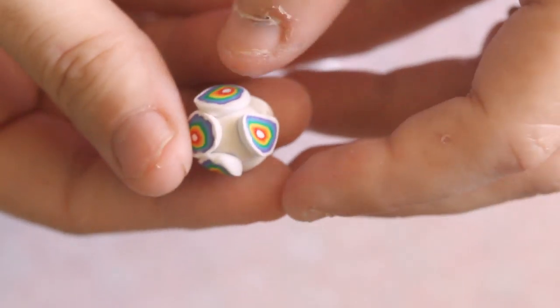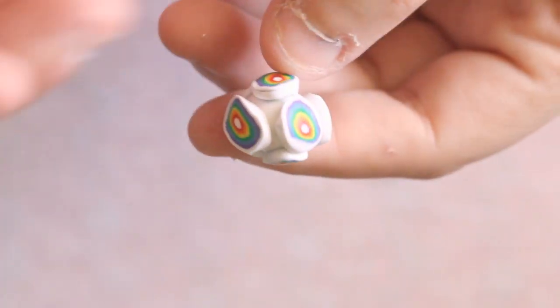Now what you're going to do with them all stuck all over the ball is start rolling it into a ball. Roll it until it's smooth and the parts are attached together.